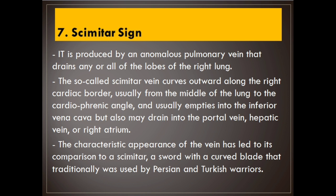Number 7: Scimitar sign. It is produced by an anomalous pulmonary vein that drains any or all of the lobes of the right lung. The so-called scimitar vein curves outward along the right cardiac border, usually from the middle of the lung to the cardiophrenic angle, and usually empties into the inferior vena cava but also may drain into the portal vein, hepatic vein, or right atrium. The characteristic appearance of the vein has led to its comparison to a scimitar, a sword with a curved blade traditionally used by Persian and Turkish warriors.